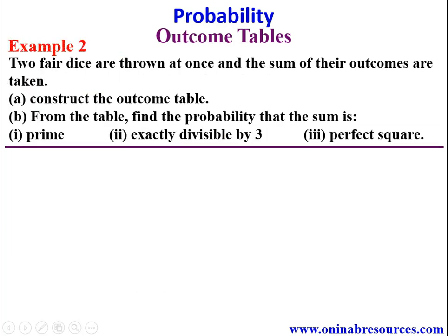Example 2: two fair dice are thrown at once and the sum of their outcomes is taken. A) Construct the outcome table. B) From the table find the probability that the sum is: 1) prime, 2) exactly divisible by 3, 3) a perfect square. Two fair dice means each face has an equal chance of showing up. If biased, one or two particular faces have a higher chance. We start constructing the outcome table.